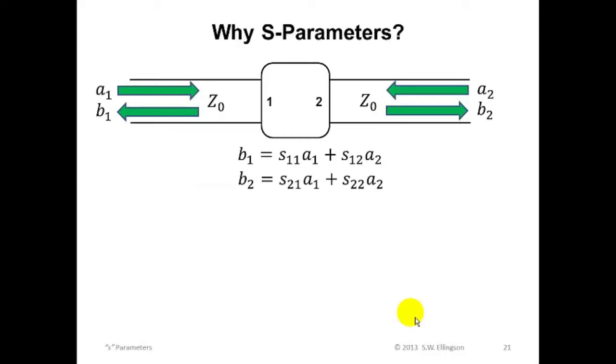At this point, you might fairly note that the preceding derivation of these non-physical power waves, and their associated S parameters, seems a bit convoluted. You might wonder why Z, Y, or H parameters might not be a better way to characterize two ports, even at radio frequencies. Well, there's two reasons for this, and I'd like to just briefly show you why.